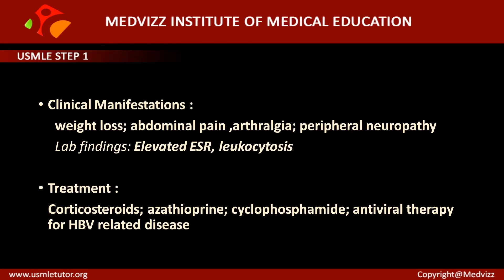Peripheral neuropathy is another important finding. The most common findings are weight loss, abdominal pain, arthralgia, and peripheral neuropathy. Constitutional symptoms include fever, malaise, nausea, vomiting. Due to severe hypertension, there will be cotton wool spots from retinal occlusions caused by involvement of the retinal arteries. Rare findings include myocarditis, pericarditis, and palpable purpura.